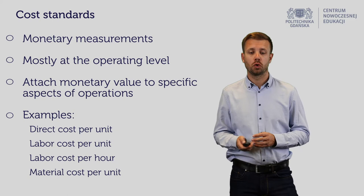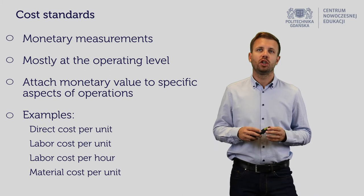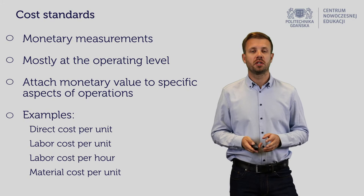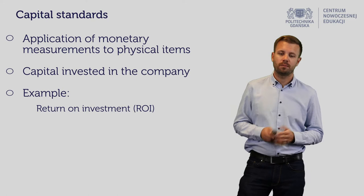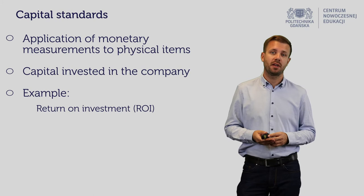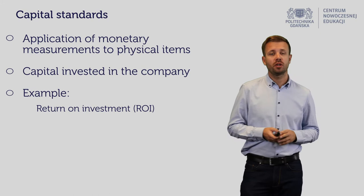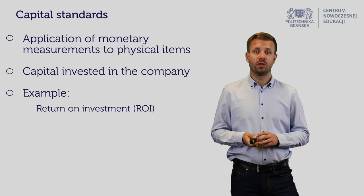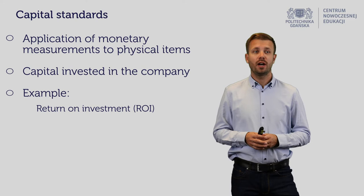Cost standards represent exactly the opposite perspective from physical standards — I won't go into more detail there. Next, capital standards. These help you determine which investment is most profitable. For example: investment in product A — you invest 10,000 euro and get 1,000 euro profit; product B — you invest 100 euro and get 30 euro profit; product C — you invest 1 million euro and get 1,000 euro profit.